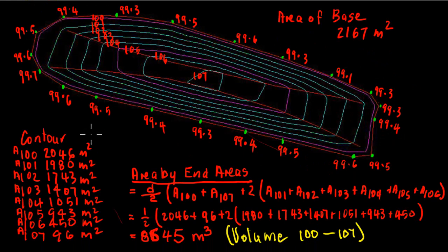Now the next step is to work out the area of each contour, and there's various ways of doing that. You might be able to do it with a planimeter and work out the area. So this here is the area contained in the 100 contour, the 101, 102, 103, 104, 105, and so on. We are able to use the end area formula.